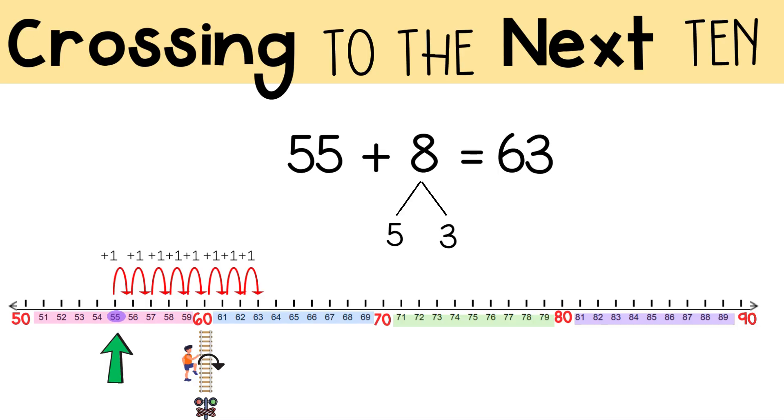Did you notice that when I cross a ten, I make a number bond with my second addend? First, I write the number of jumps it took me to get to the 10. Then, I write the number of jumps I have left. Making a number bond with the second addend helps because it breaks the number into smaller parts to make adding easier.